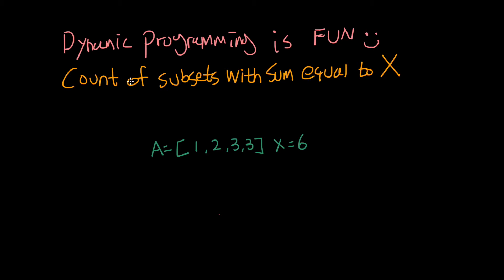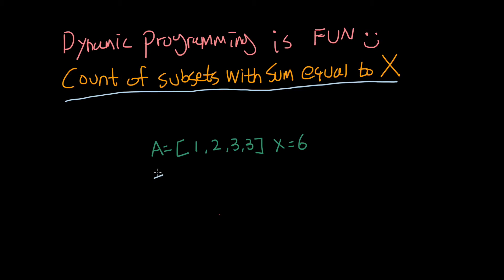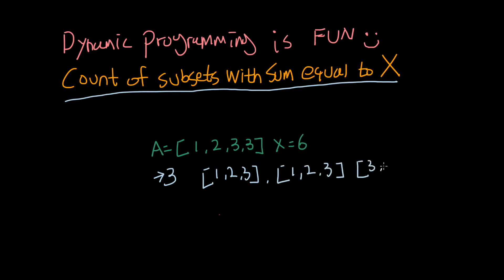Before I introduce the four steps, I want to introduce today's question. Today's question is: count of subsets with sum equal to X. So let's say we have array A = [1, 2, 3, 3] and integer X equals six. The answer is three, because we can have subsets {1,2,3}, {1,2,3}, and {3,3} — all summing to six. We are just counting each subset with sum equal to this X value.